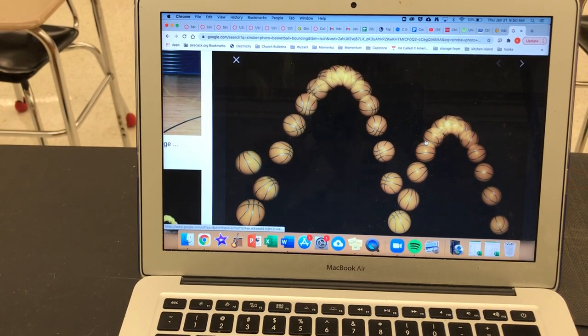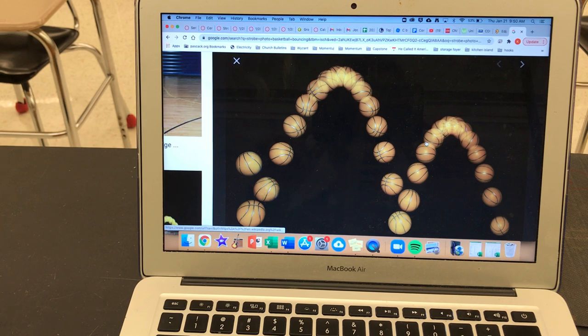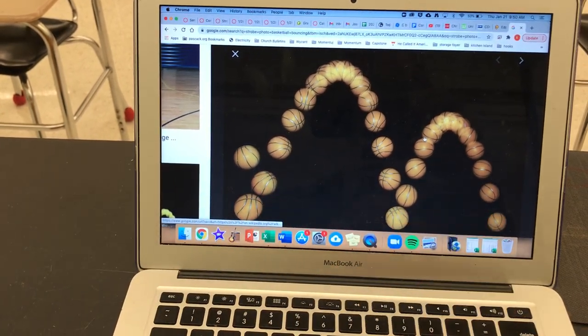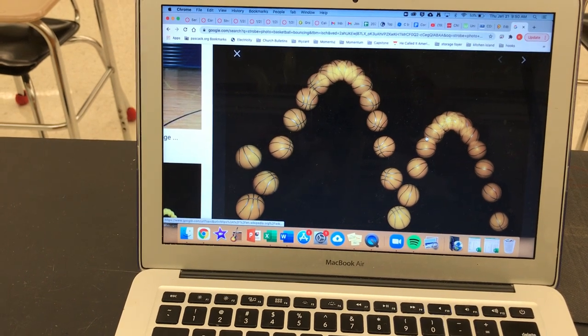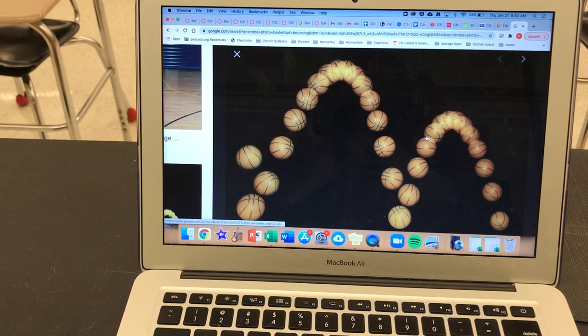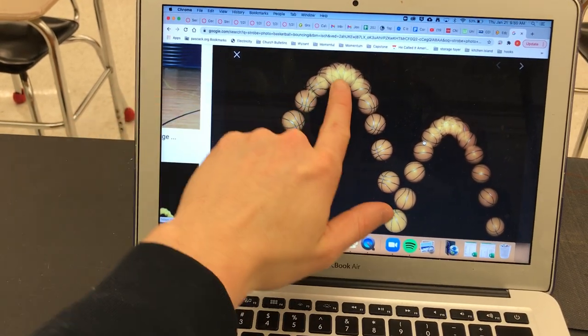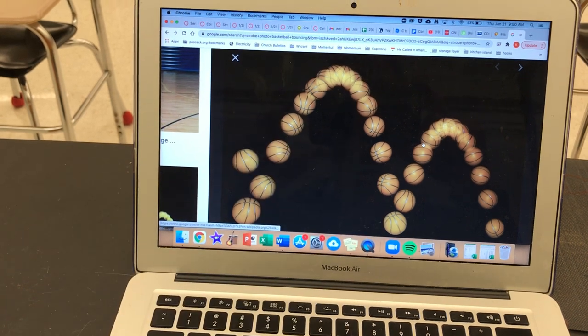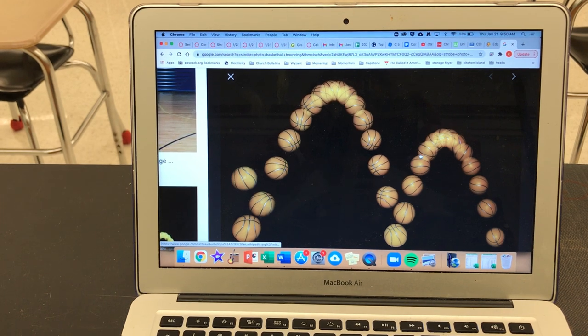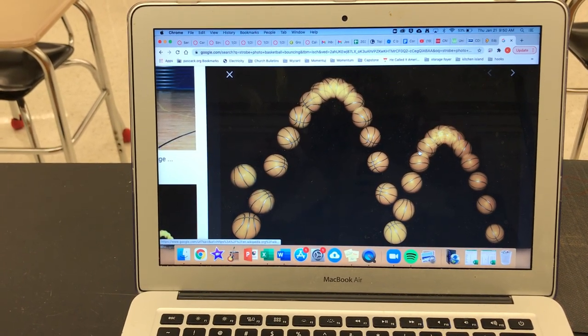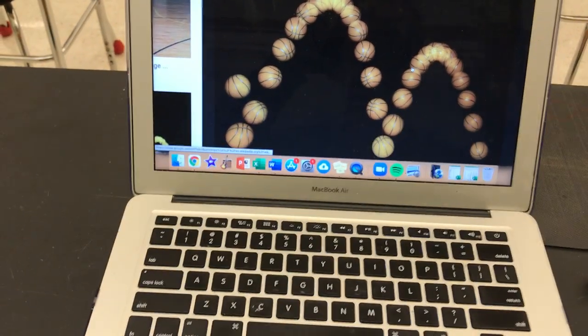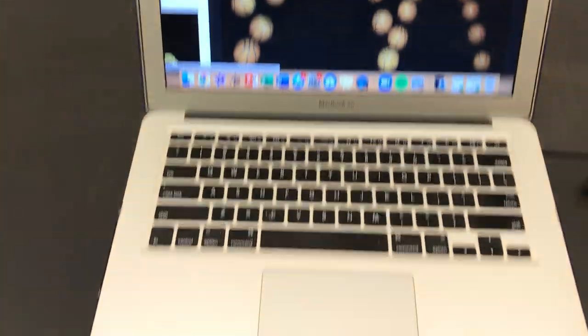So you could see where the ball is more spaced apart is where the ball is going faster. Lower to the ground, where it's faster, there's more space between each picture of the ball. But as it slows down towards the top, there's very little space between the pictures of the ball because the ball is traveling slow at the top. So that's why we call it strobe photos. You can look up more into photography if you'd like. But let's get started with the notes now.